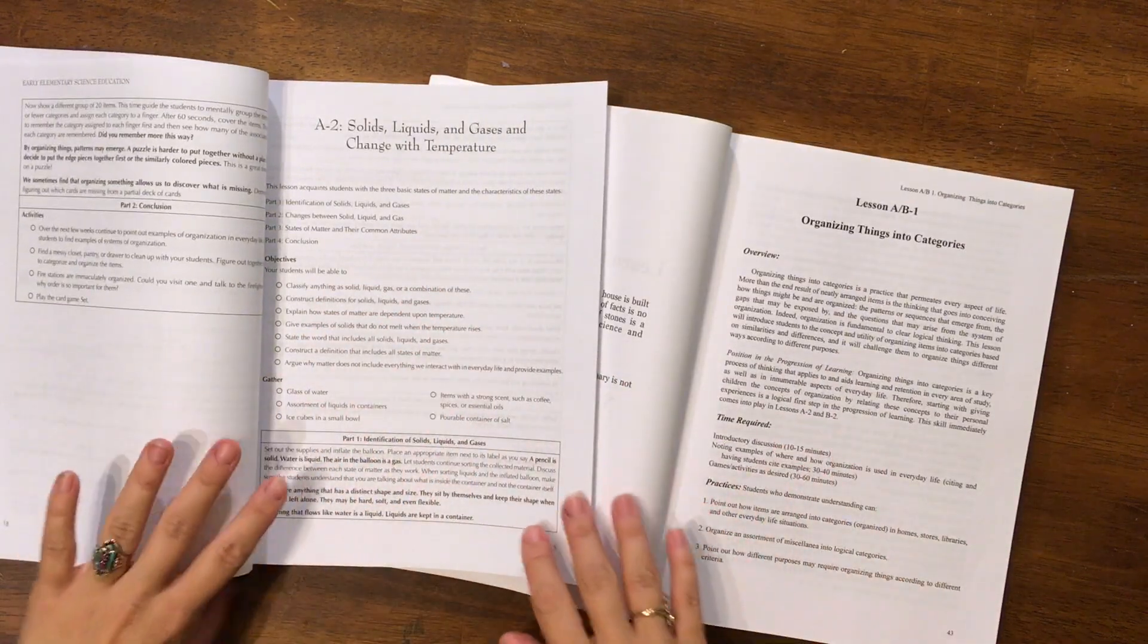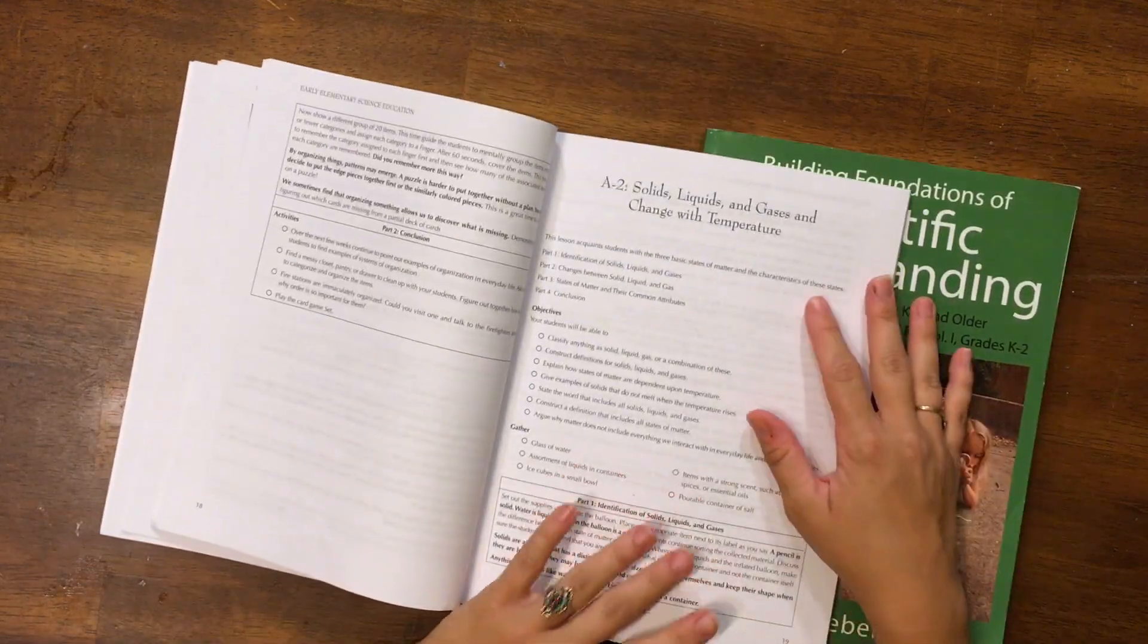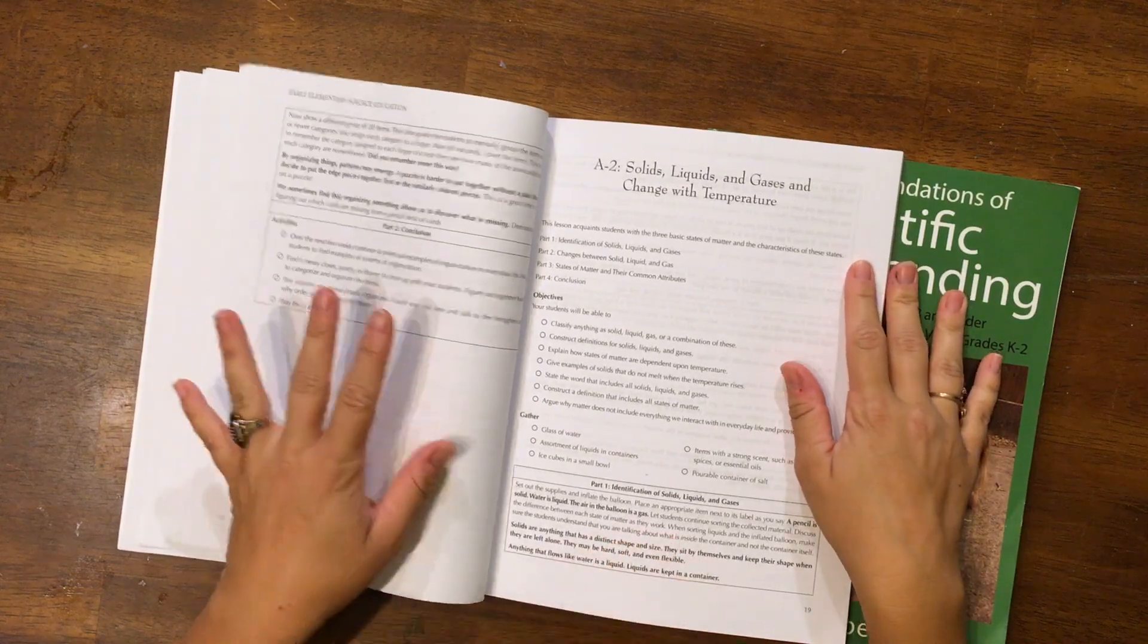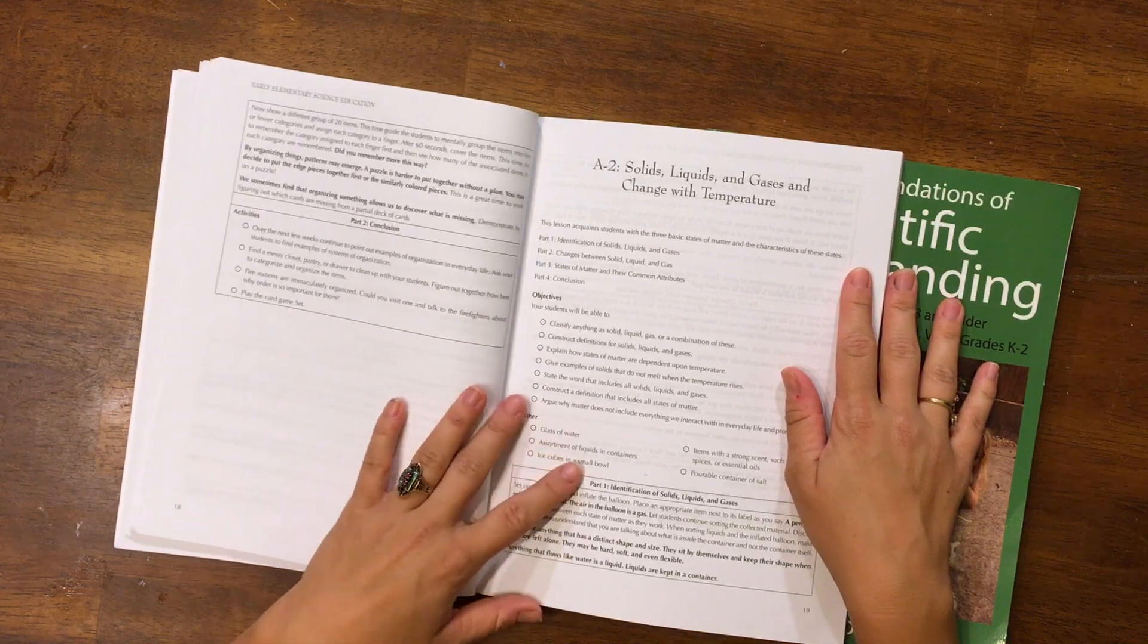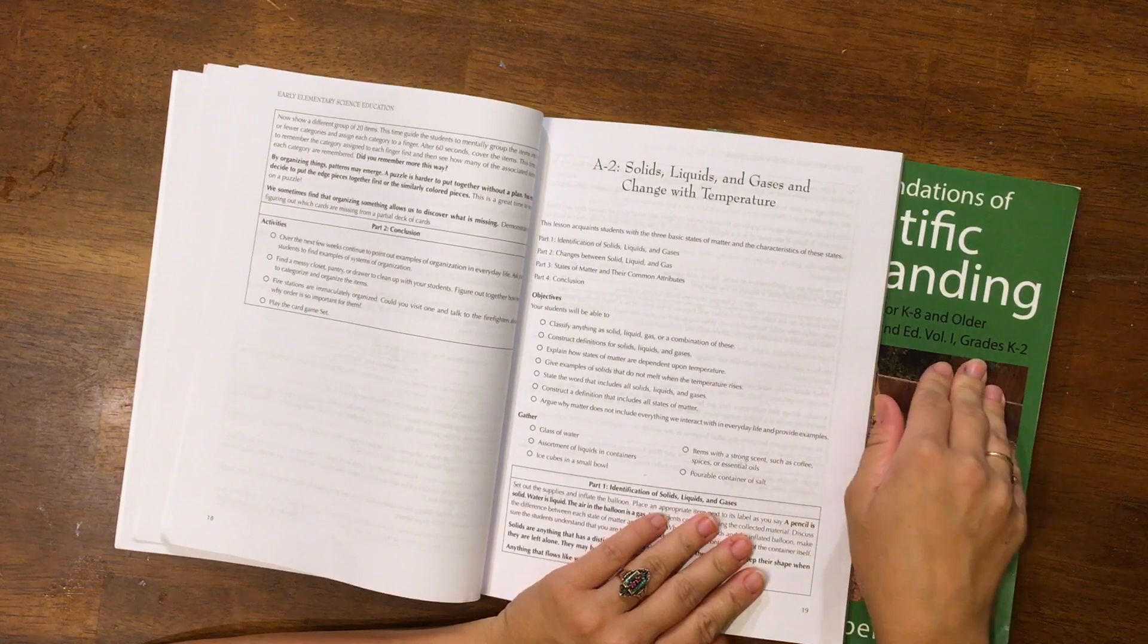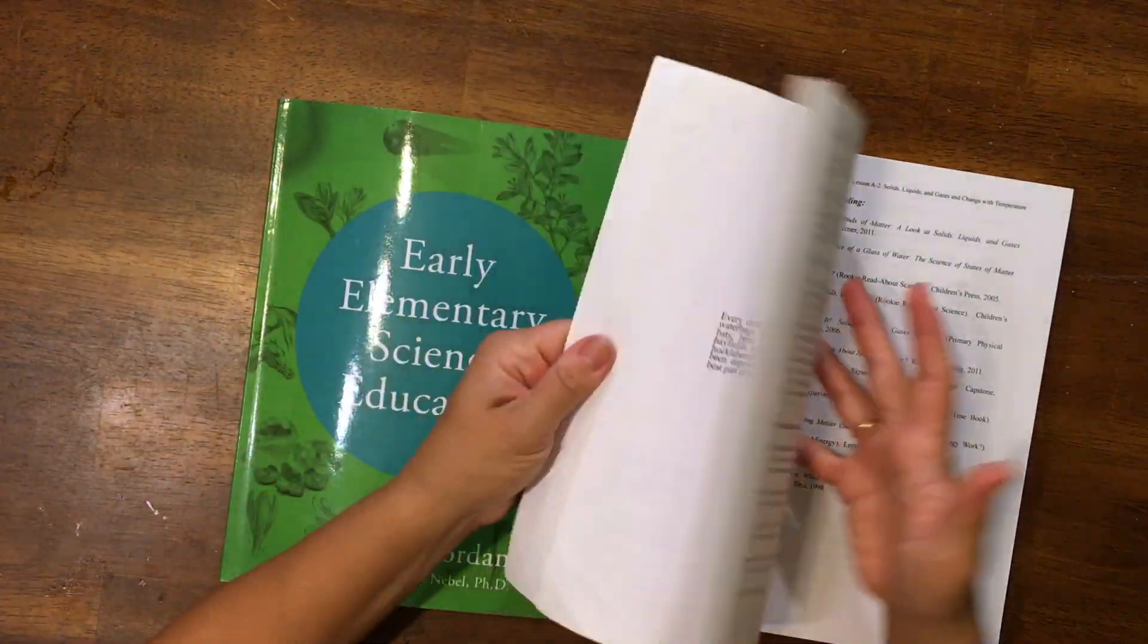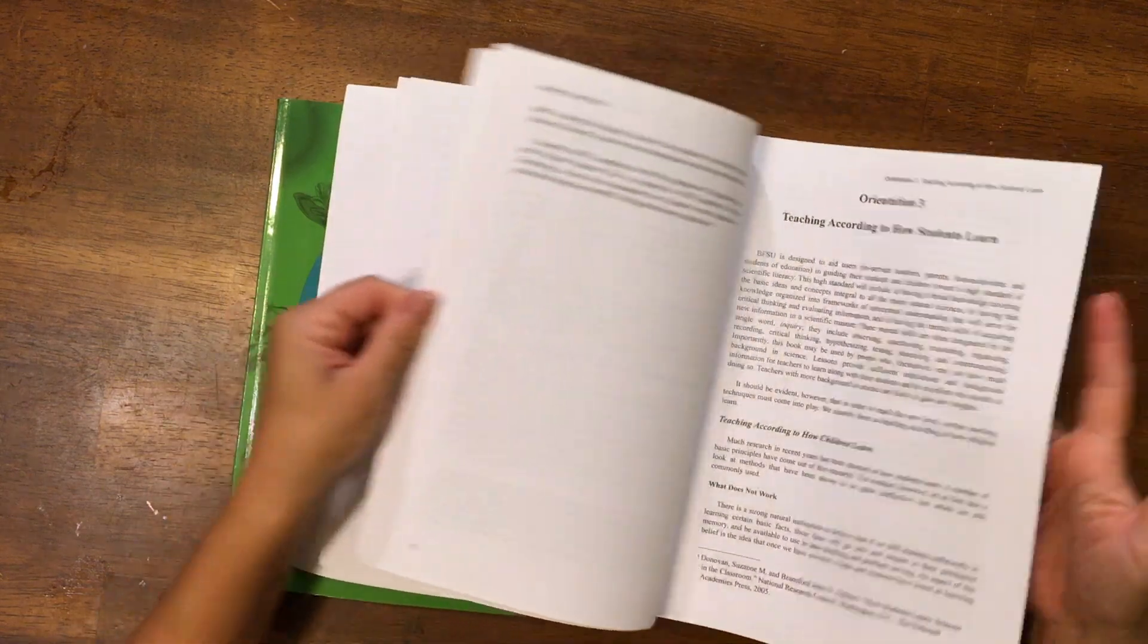I really recommend this curriculum to anybody that wants to give their child a really good foundation for scientific thinking and understanding. It goes beyond just memorizing facts and figures and doing worksheets. It really helps them understand the base of science and that they can grow from there. With the scope and sequence, it's good because every lesson kind of builds on itself.